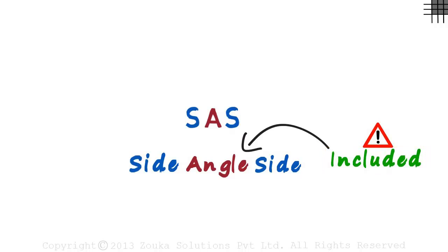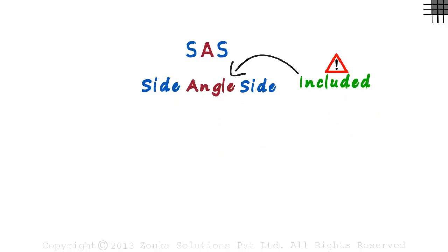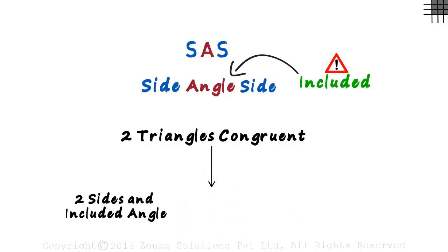First, let's understand what the condition tells us. It says that two triangles are congruent if two sides and the included angle of one triangle are respectively equal to the two sides and the included angle of the other triangle.